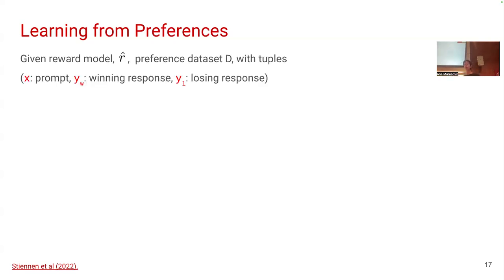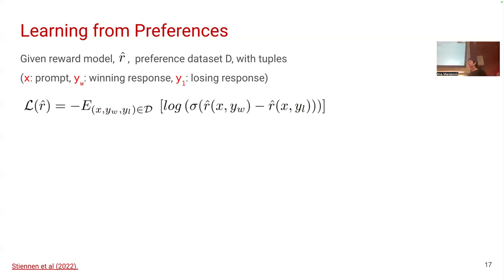You train a model using the preferences you collected. Your reward model can be another language model — for example LLaMA 3 or whatever you want. In your dataset you have your prompt, a winning response, and a losing response — the winning response being what the person preferred. The way to train a reward model to give higher rewards to preferred responses relative to losing responses is to use this loss function. In this loss function, you have an expectation over the dataset. You have log of sigmoid, where the input is the difference between the current reward for the winning response minus the reward score for the losing one.